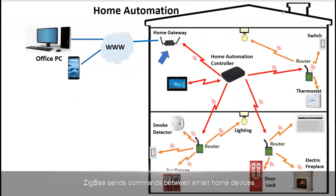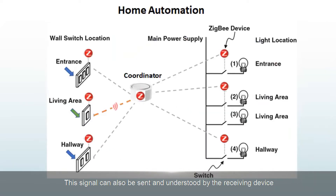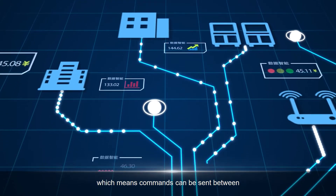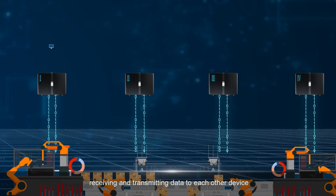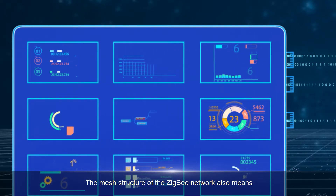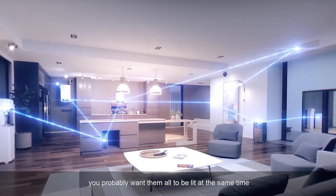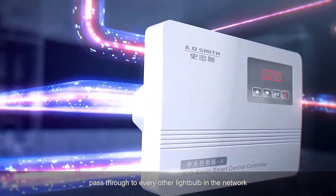How does ZigBee work? ZigBee sends commands between smart home devices — such as from a smart speaker to a light bulb, or from a switch to a light bulb — without going through a central control hub like a Wi-Fi router. Signals can be sent and understood by the receiving device regardless of manufacturer, as long as both support ZigBee. ZigBee operates as a mesh network, meaning commands can be sent between devices on the same network. Each device acts as a node, receiving and transmitting data, helping instructions spread further. The mesh structure also means there is no single point of failure — if one device doesn't work, commands can still pass through to every other device in the network.